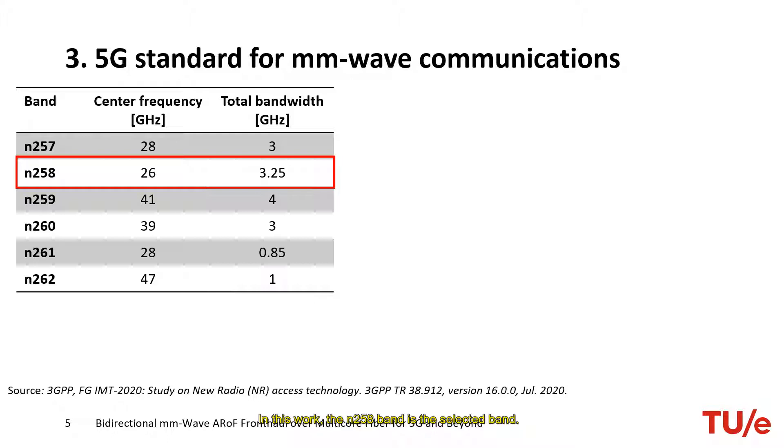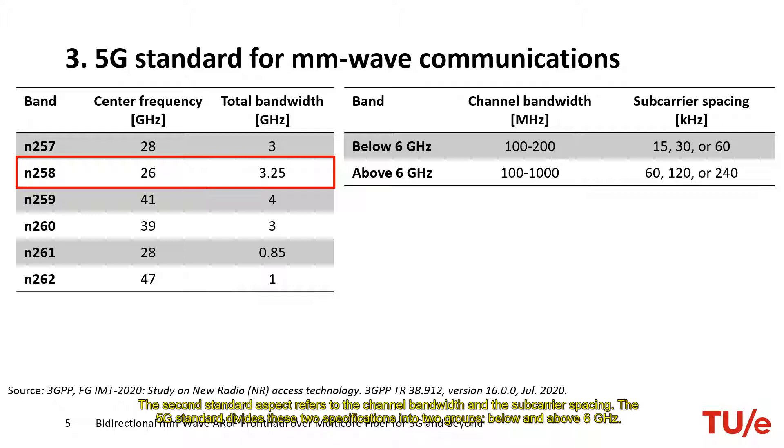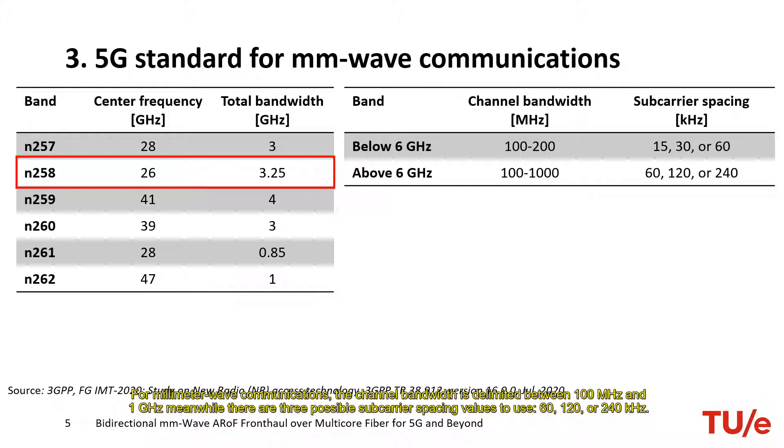The second standard aspect refers to the channel bandwidth and the subcarrier spacing. The 5G standard divides these two specifications into two groups: below and above 6 GHz. For millimeter wave communication, the channel bandwidth is delimited between 100 MHz and 1 GHz, meanwhile there are three possible subcarrier spacing values to use: 60, 120, or 240 kHz. For this work, 120 kHz of subcarrier spacing is the chosen value.